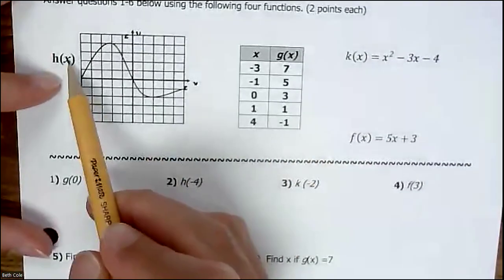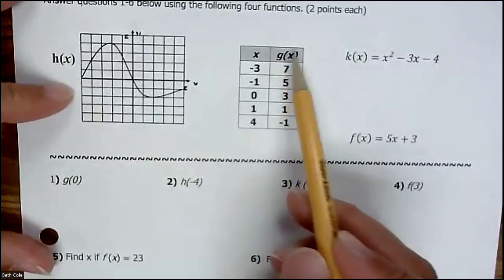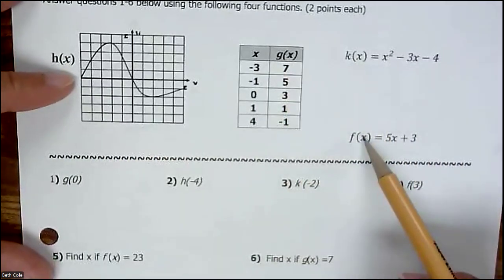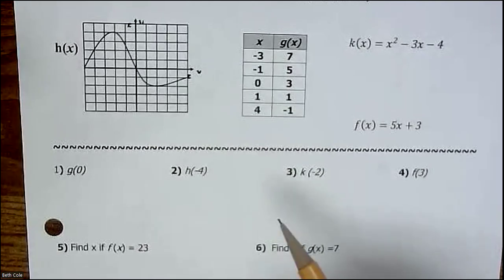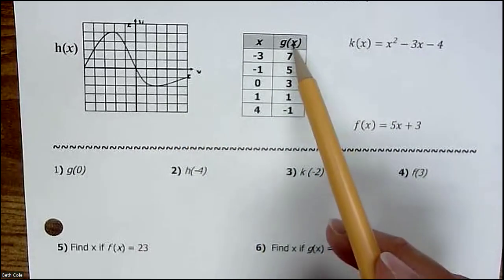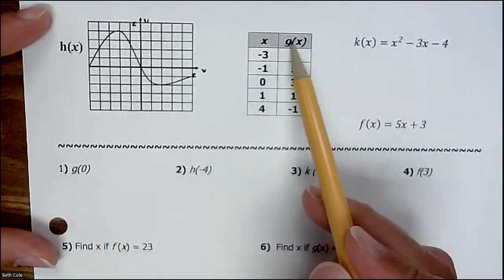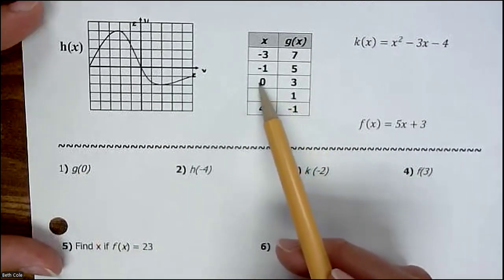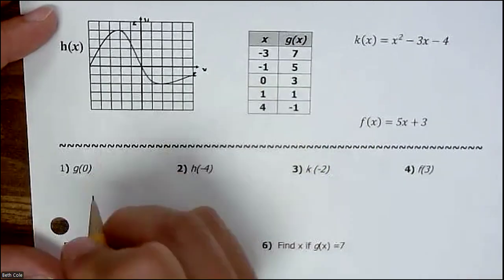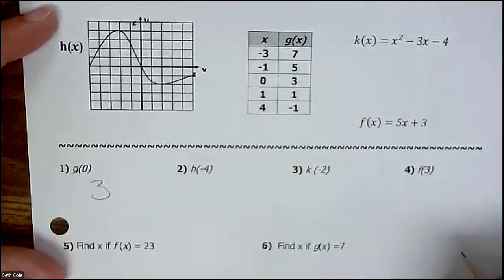Here we have four different functions: h of x, g of x, k of x, and f of x. When you answer these, you just have to make sure that you look at the correct one. This is g of 0, so we're going to look at g. We're going to find 0 on x, and it matches 3, so 0 gives you 3.